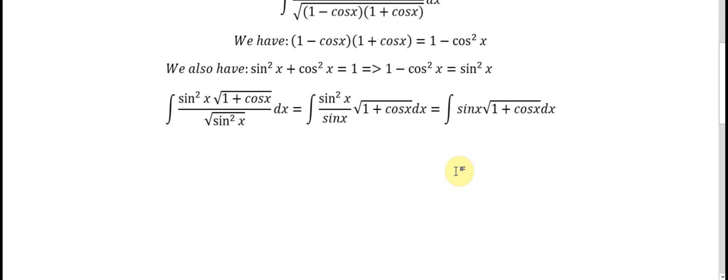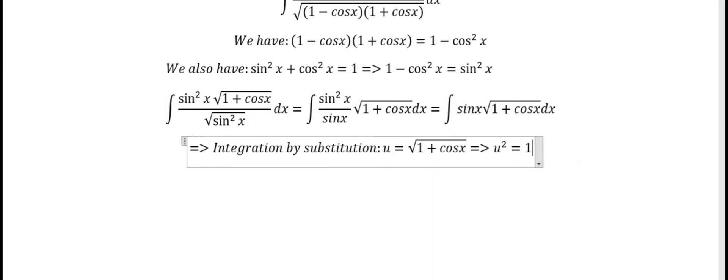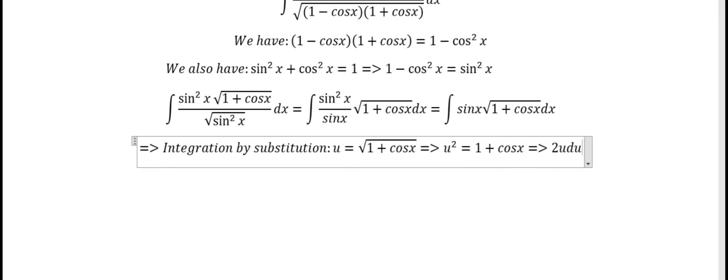The next step we will use integration by substitution. We let u equal the square root of 1 plus cosine s. Then we have u squared equals 1 plus cosine s. Now we do the first derivative on both sides. We get 2u du equals minus sine s ds.